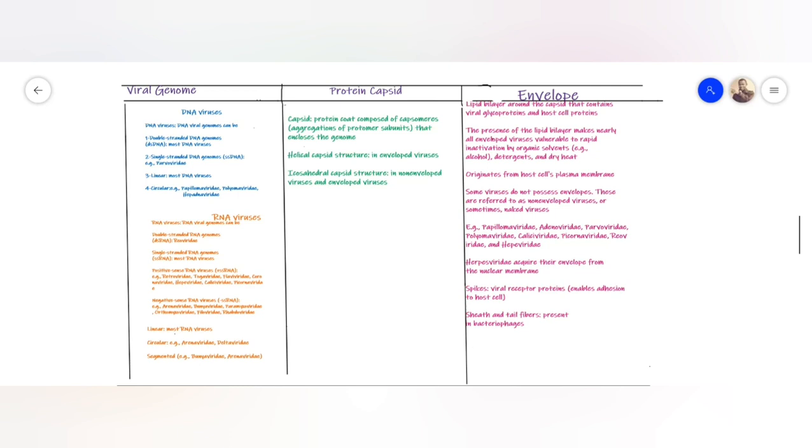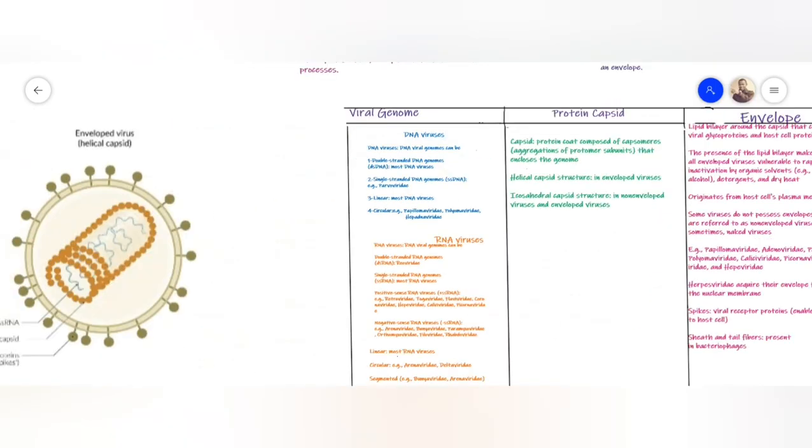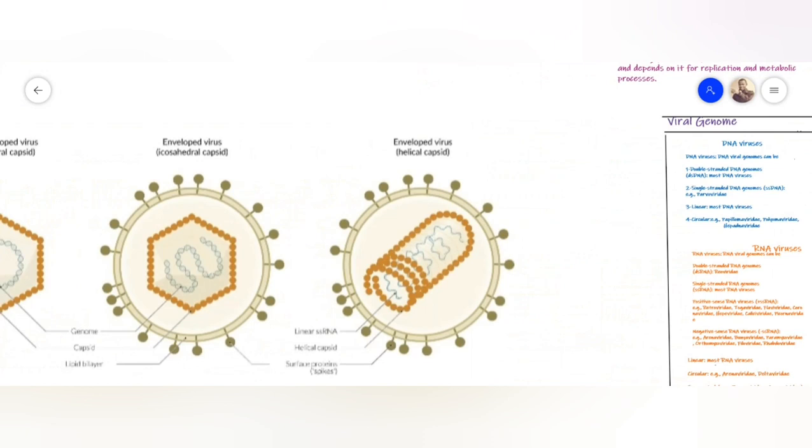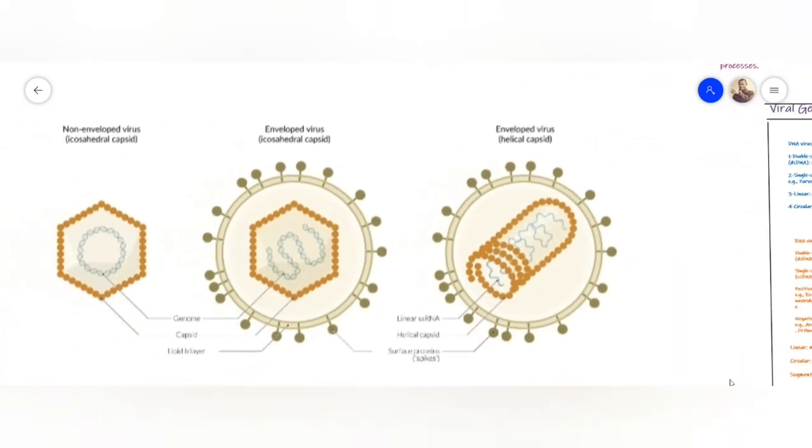I also need to talk about the spikes on this envelope. These spikes are viral receptor proteins that enable adhesion. They help the virus to adhere to the host cells. About bacteriophages, which are viruses that attack bacteria, they have sheaths and tail fibers. I will show you the structure of bacteriophages in the next video. For now, I want to show some images illustrating the structures we just described.